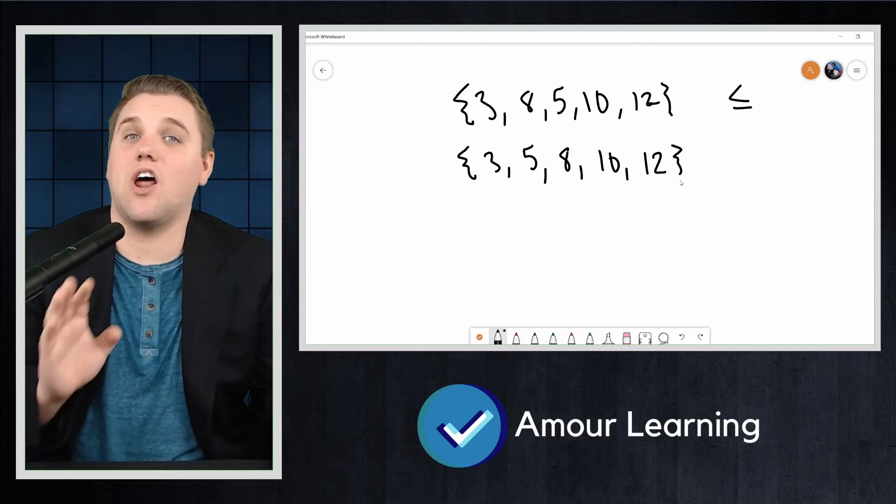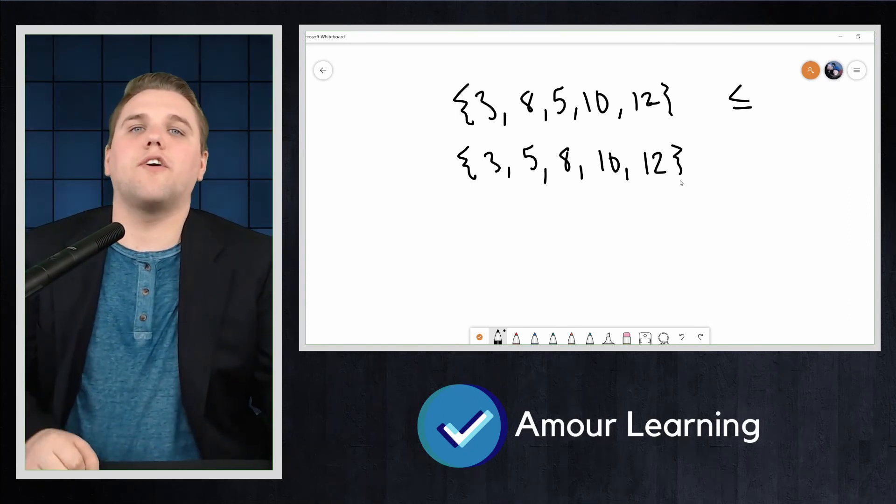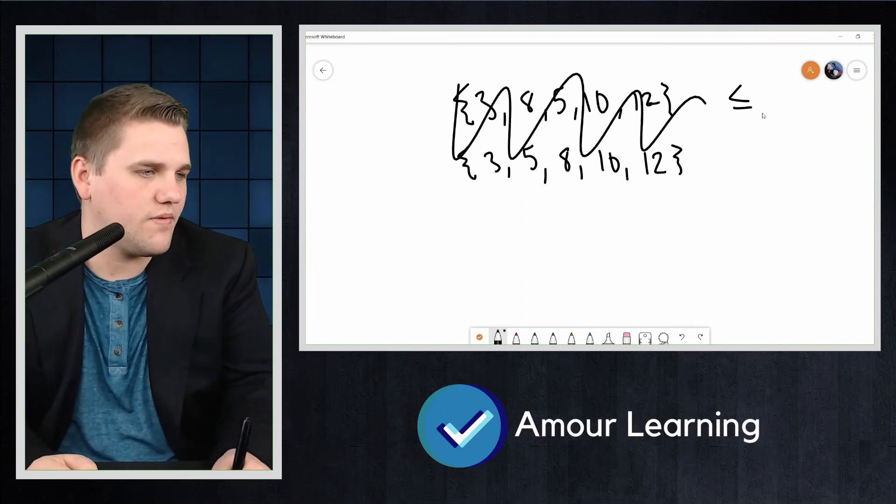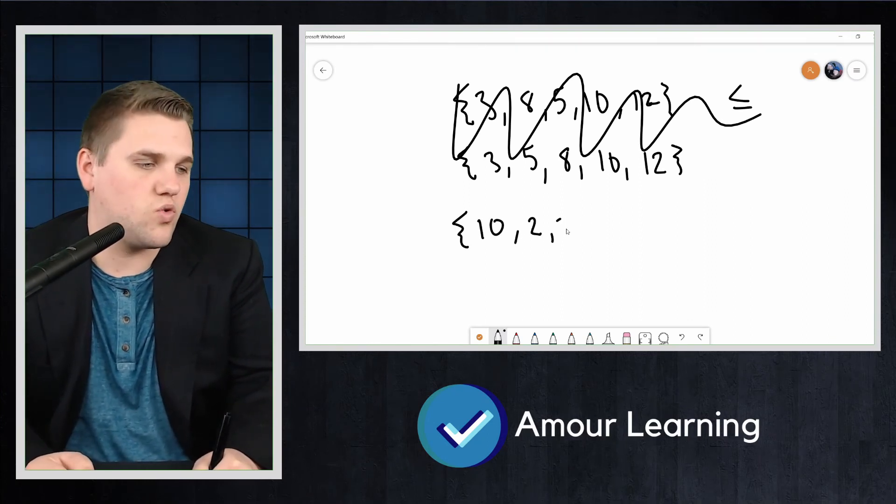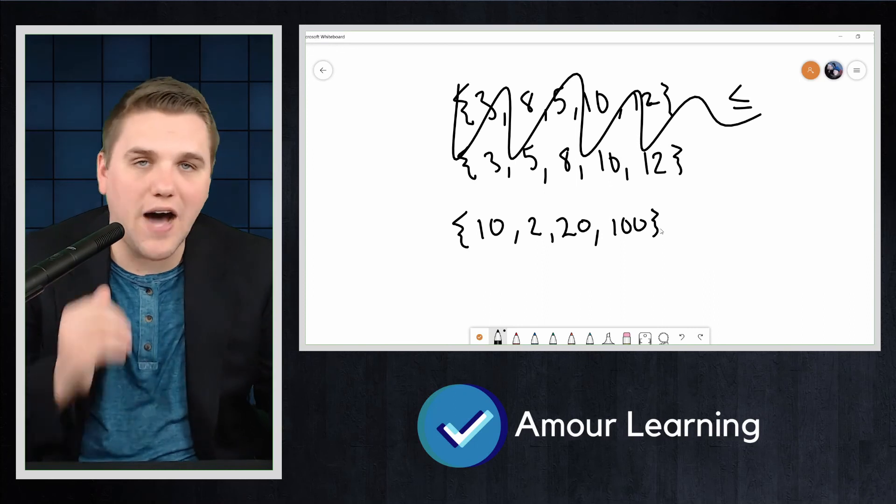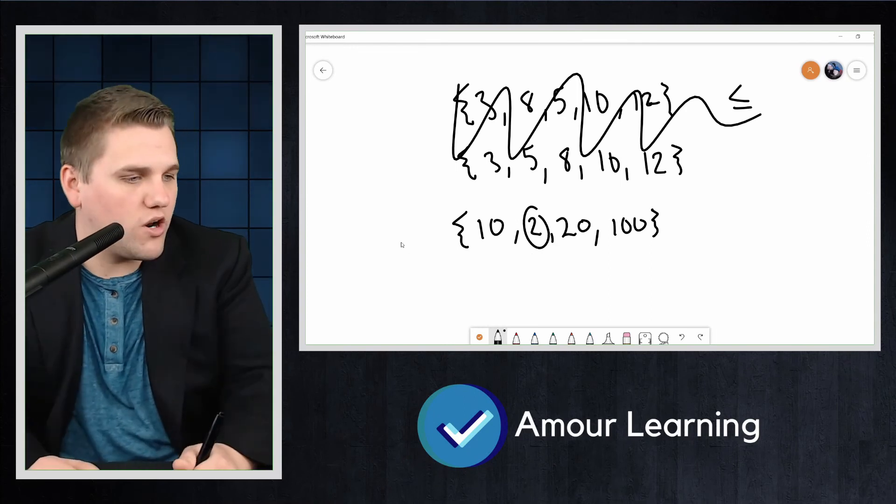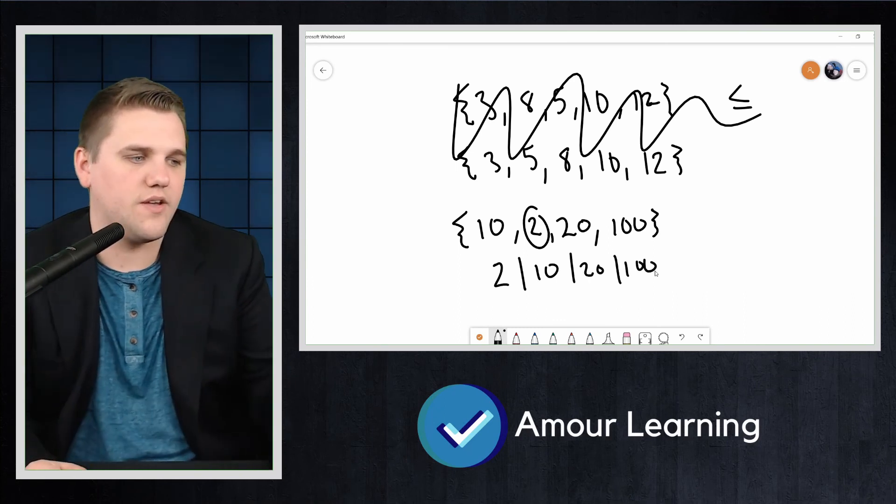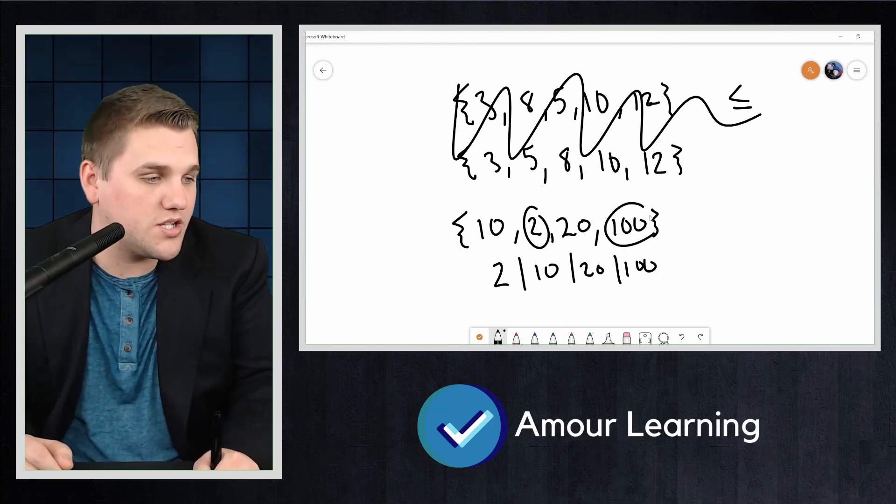With partial ordered sets that aren't totally ordered, there might not be a least element. For example, under the divides partial ordering, if we're looking at the set {10, 2, 20, 100}, what's the smallest element under the divides partial ordering? Well, this has a least element of 2 because we can order this as 2 divides 10, divides 20, divides 100. And so this would mean that the least element is 2 and the greatest element is 100.